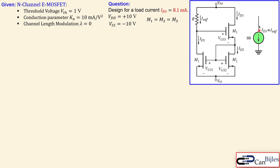We have discussed this circuit also using BJTs, but now we are using the n-channel enhancement MOSFET. They are all matched, so M1 equals M2 equals M3 — they have the same threshold voltage, the same conduction parameter, and the channel length modulation for all of them is zero.